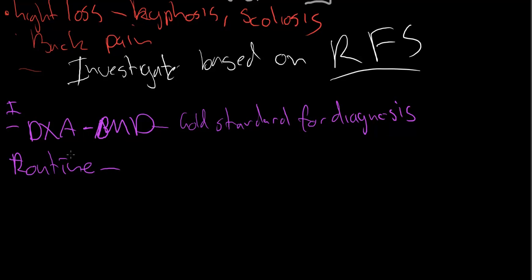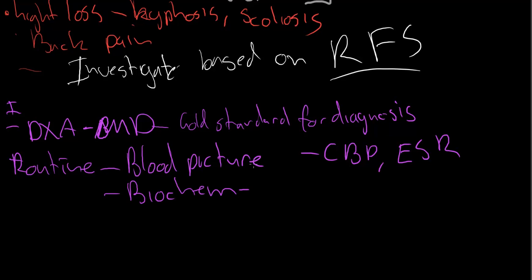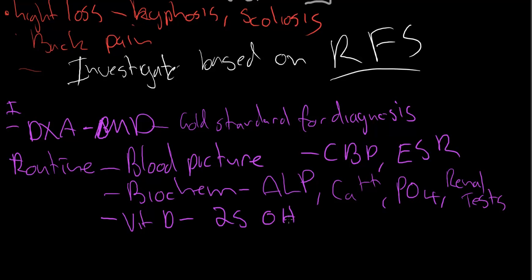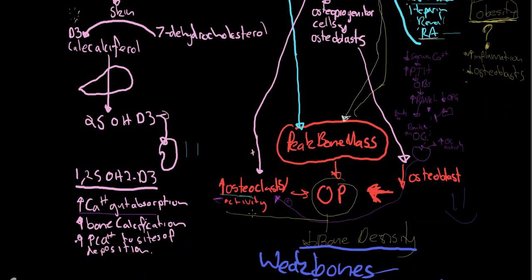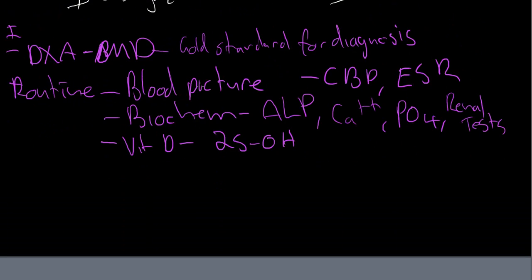On to investigations. Gold standard for diagnosis is the DXA BMD—bone mineral density. That's your gold standard for diagnosis. Other routine investigations: once you diagnose somebody clinically or based on the DXA, you wanna get blood picture—CBP, ESR—you wanna do biochem—your ALP, serum calcium, serum phosphate—get some renal tests. You also wanna measure vitamin D. You wanna do the 25-OH one, not the active form, before it's converted by the kidneys.